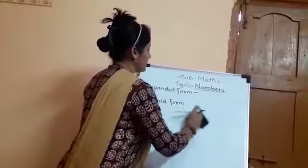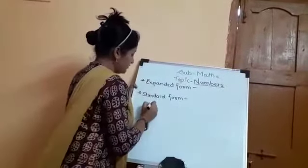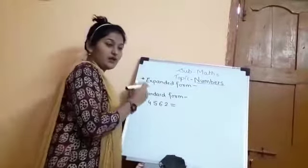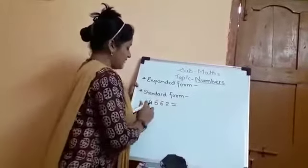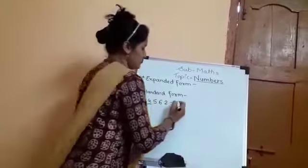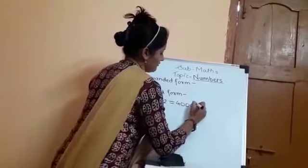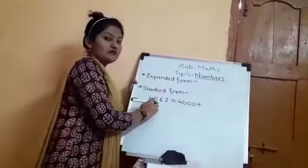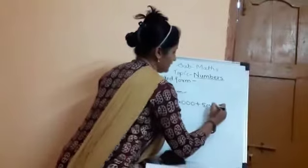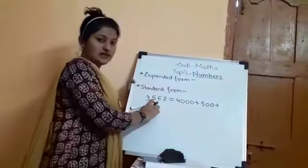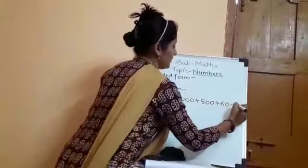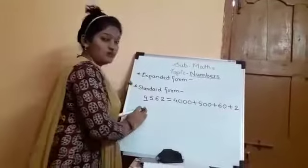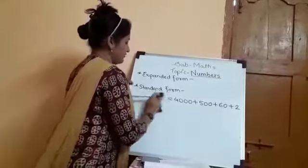You can write the Expanded Form of a 4-digit number. If you have a number 4562, this is a 4-digit number. Start from the left side: the first digit 4 is at the 1000's place, so its place value is 4000. Then 5 is at the 100's place so it is 500, plus 6 is at the 10's place so it is 60, plus 2 is at the 1's place so it remains 2. This is the Expanded Form of a 4-digit number.